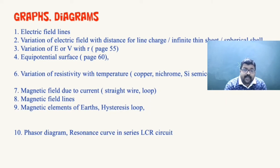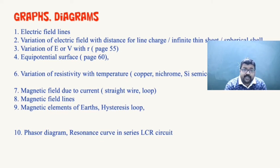Direction of the magnetic field — you need to know that if this is the direction of current, what will be the direction of the magnetic field at a particular location. Magnetic field lines. Magnetic elements of Earth — the three magnetic elements. The hysteresis loop. The phasor diagram for all cases: single elements like resistor, inductor, or capacitor; combinations of two; and the Series LCR circuit with three. The resonance curve in the Series LCR circuit is another important graph, and from it how to derive the quality factor.